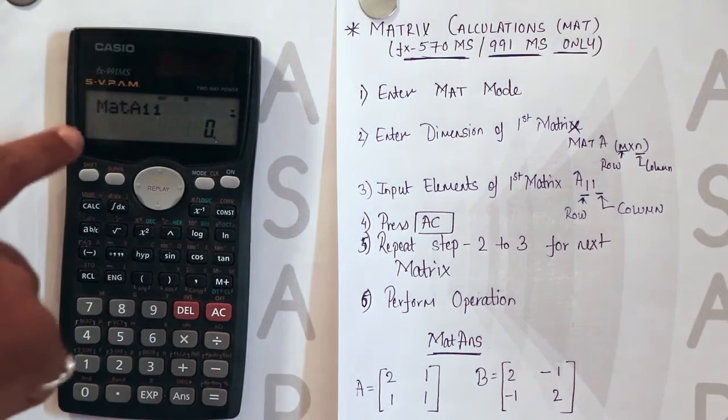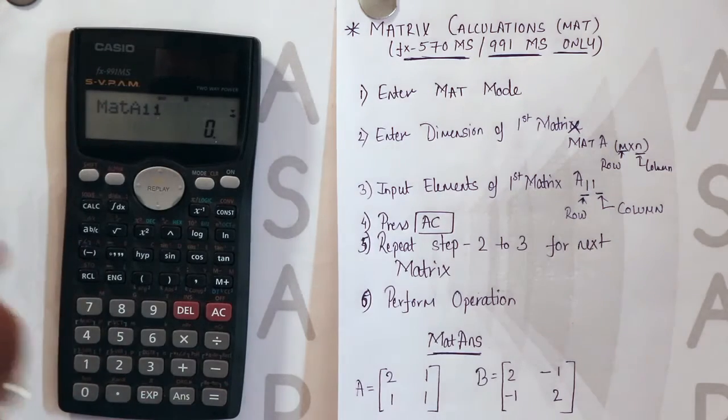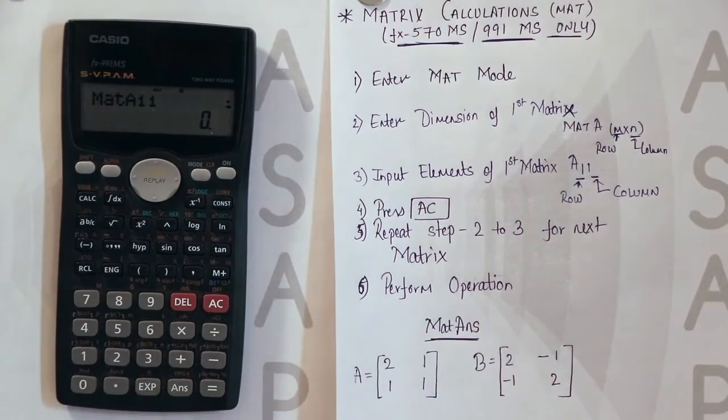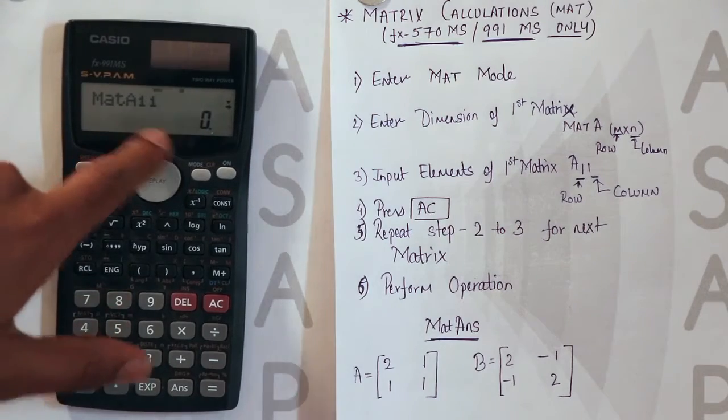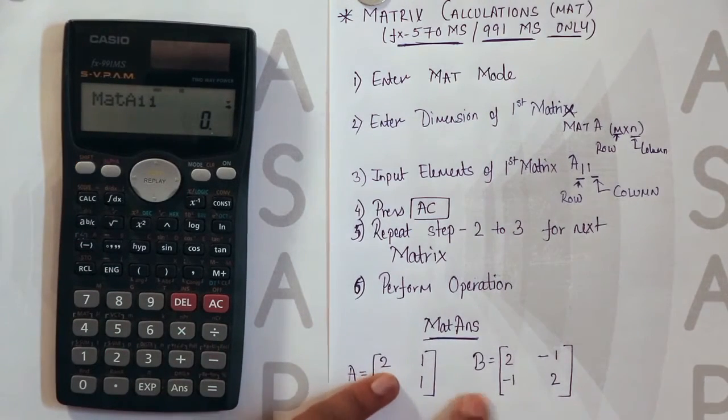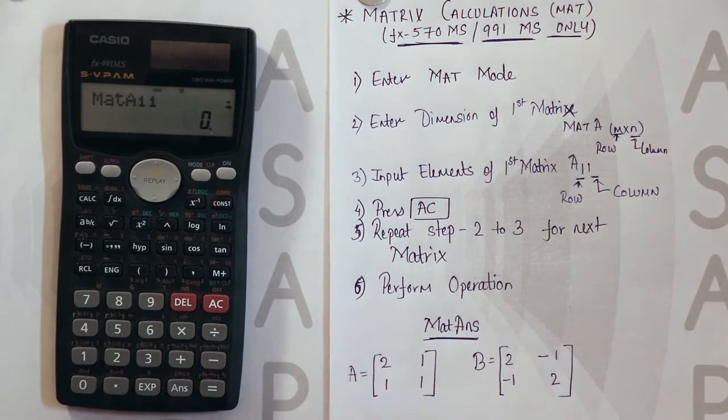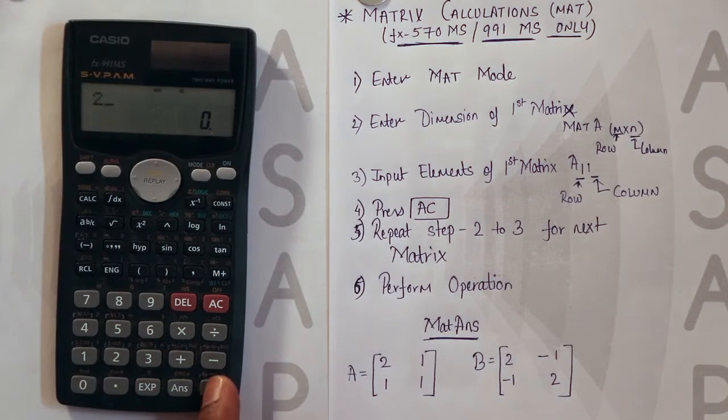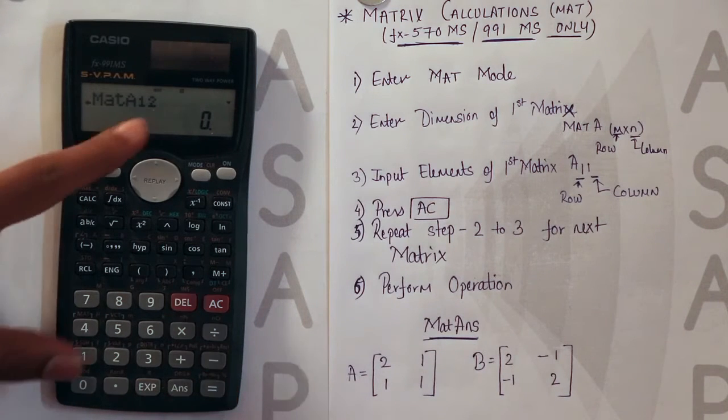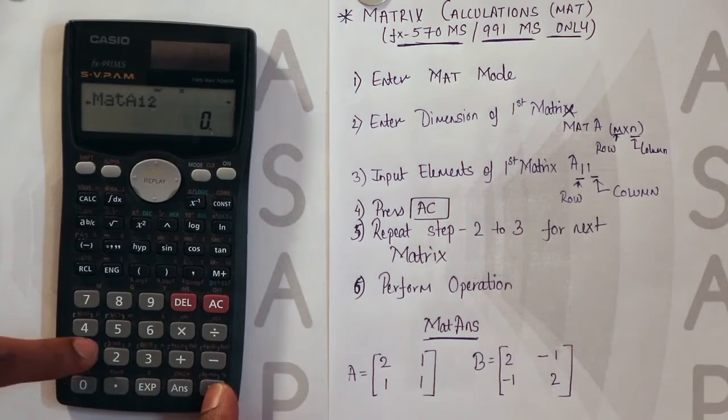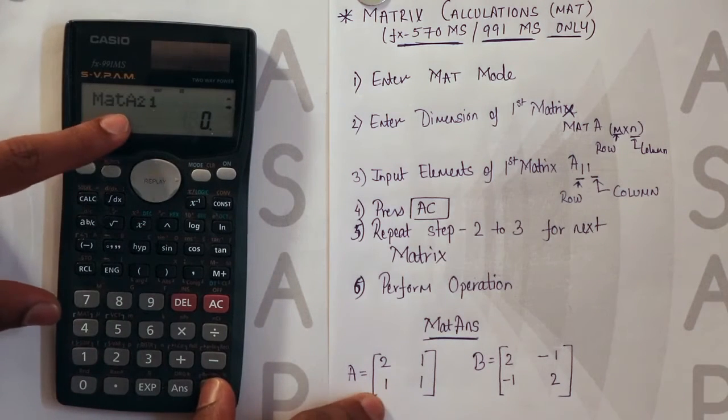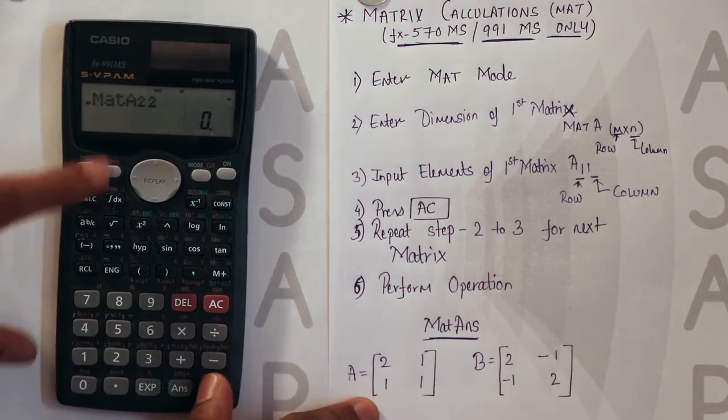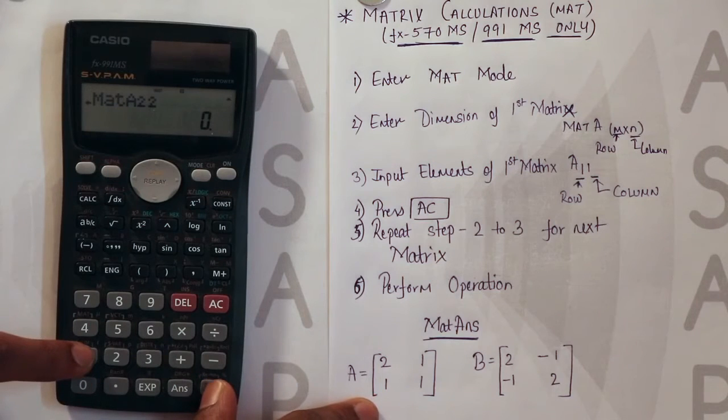As soon as you get the screen you will be asked to enter the elements of this matrix. Here we can see matrix A11 that is the element for first row and first column. Here I have taken an example of matrix A 2 1 1 1. So here we will enter 2. A12 that is first row and second column 1. Second row first column which is 1. And second row second column which is again 1.